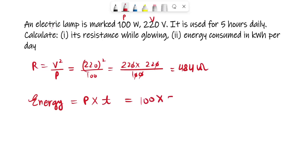So it is 100 here and time is 5, so you will get 500 watt hour. And if you want to convert it into kilowatt hour, it would be 0.5 kilowatt hour. So yes, this is the answer for the fourth one.